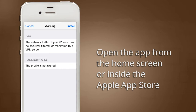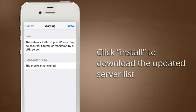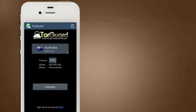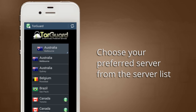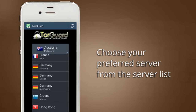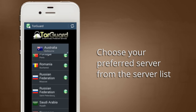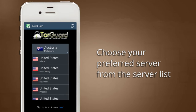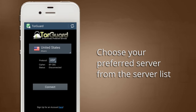The first time you run it, click Install to download the complete list of TorGuard servers. On the main TorGuard app screen, tap the server drop-down list to choose your preferred VPN server. For this tutorial, we will connect to the Miami VPN servers.